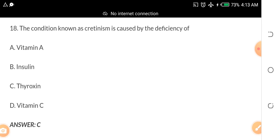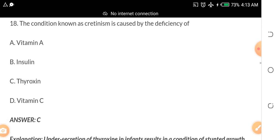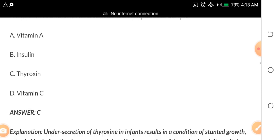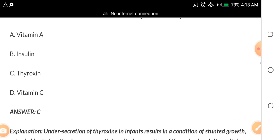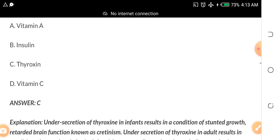A condition known as cretinism is caused by the deficiency of A. vitamin A, B. insulin C. thyroxine, D. vitamin C. If I were you, I will go and read up cretinism. The answer is C. Cretinism is caused by lack of thyroxine.